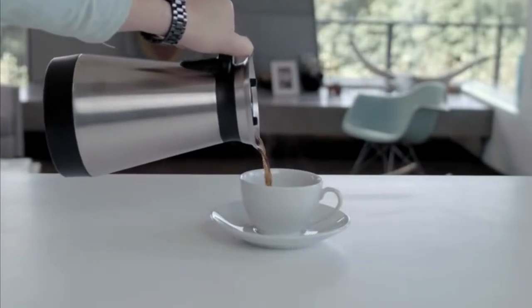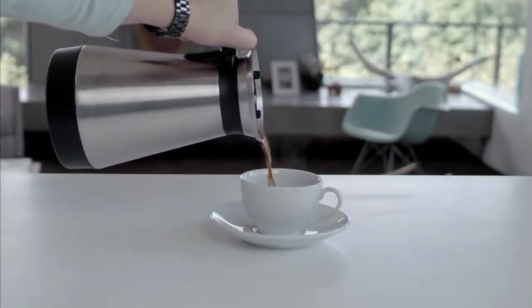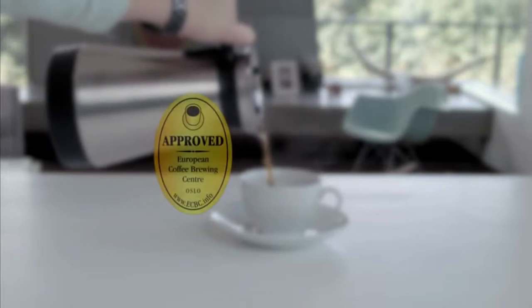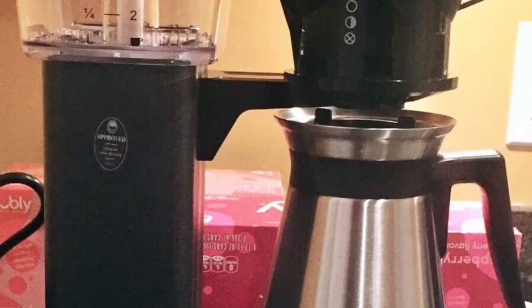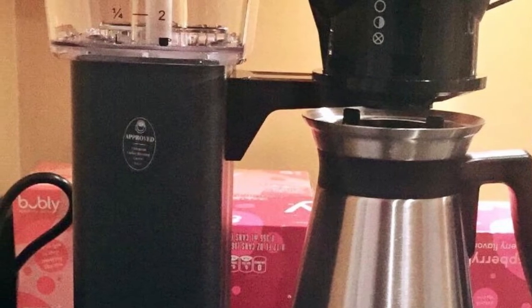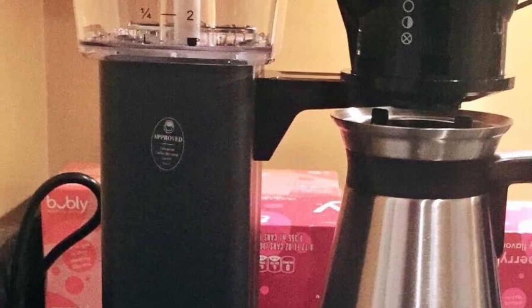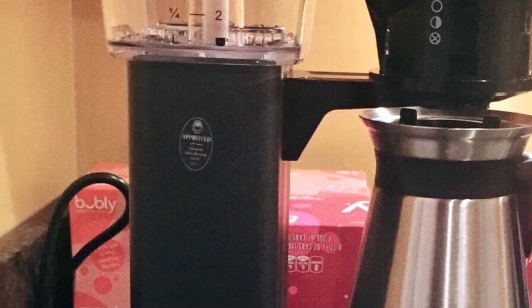The Technivorm Moccamaster is not programmable; however, it is still exceptionally easy to use. To set it up, place the filter and grounds in its brew basket, then add water to the device's transparent water tank. Then position the carafe beneath the basket.